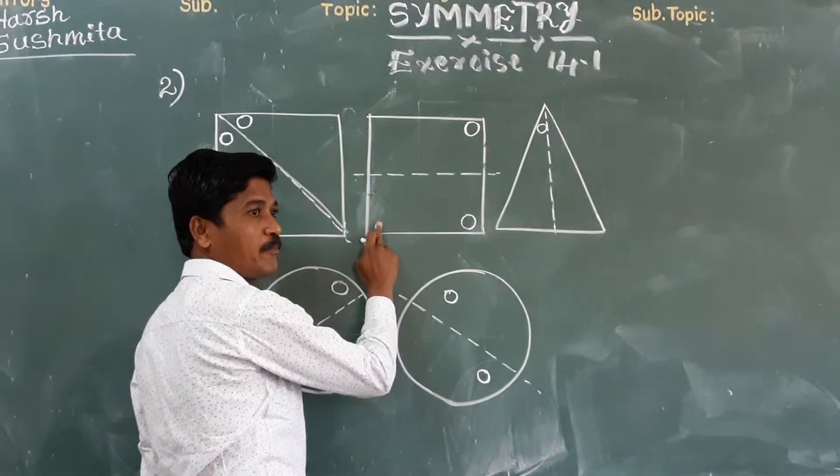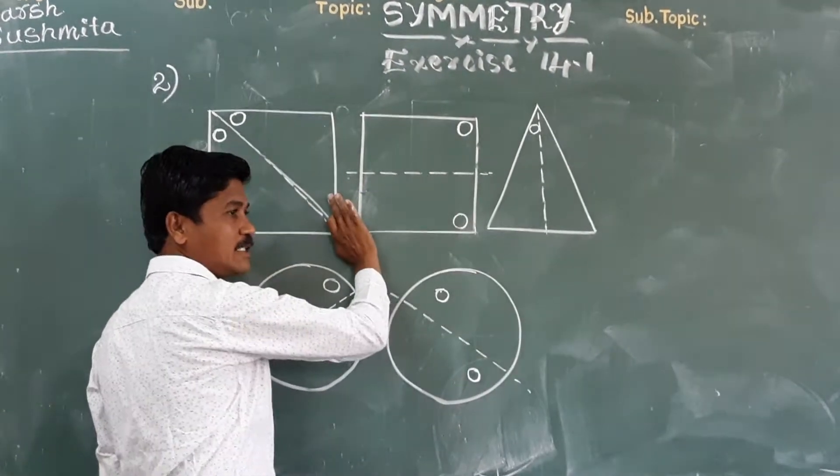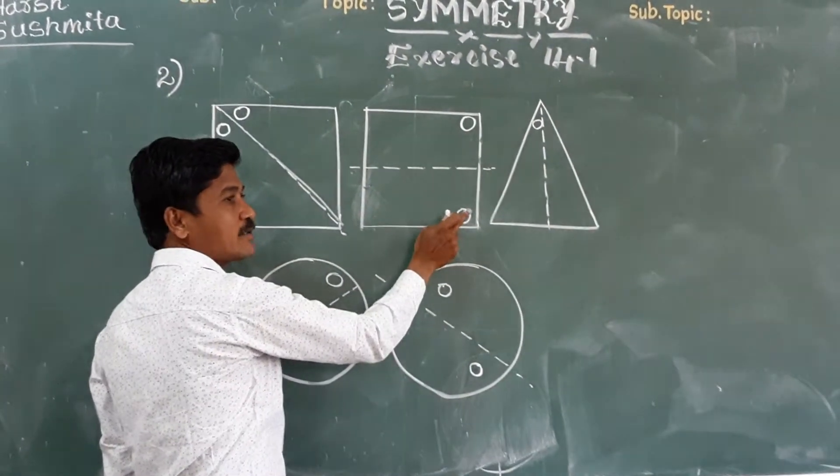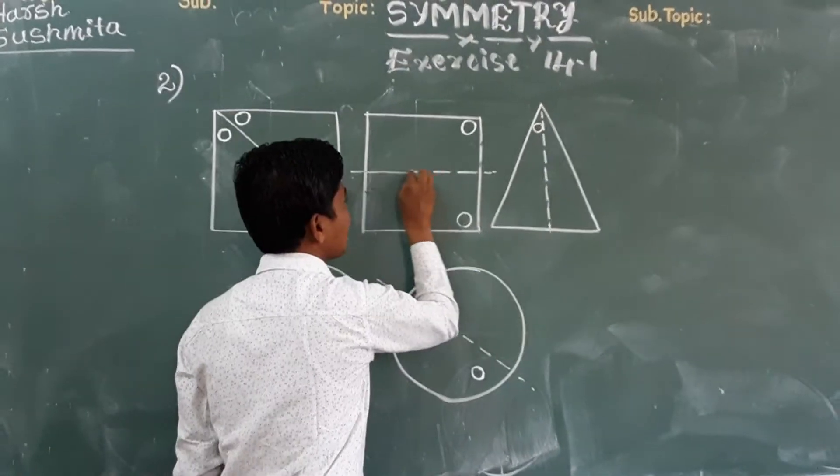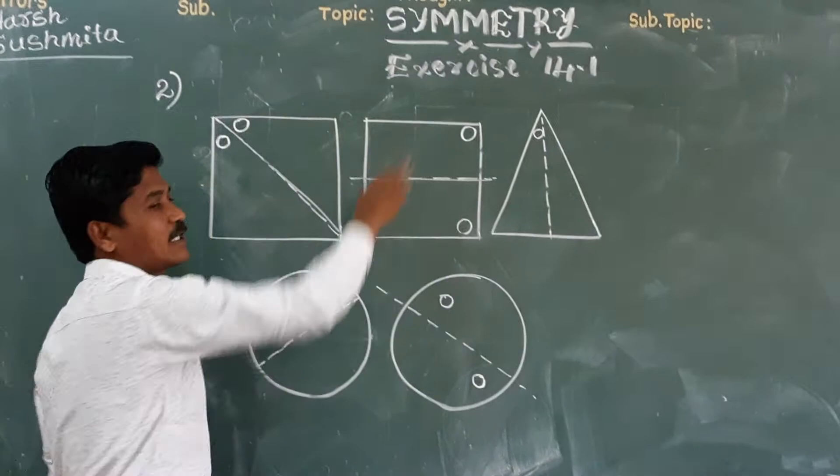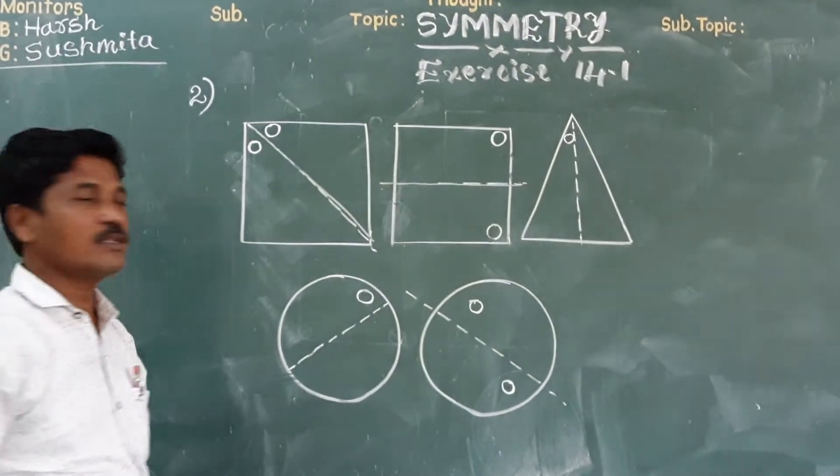Is it comes here also? No sir. Because we are not folding like this. If we are folding like this, then this circle will fall here. But what he told, this is the line of symmetry, where exactly the symbol will come.